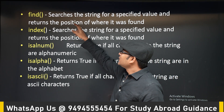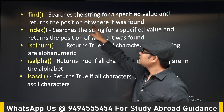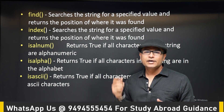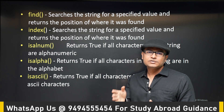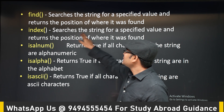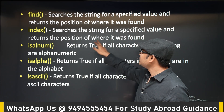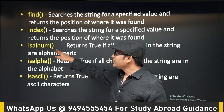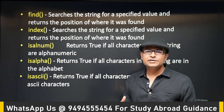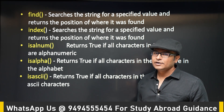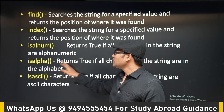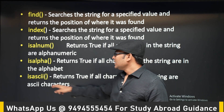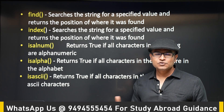Find searches the string for a specified value and returns the position where it was found the first time. For example, in the string 'ravi', find('a') will return index one. Index also searches the string for a specified value and returns the position — find and index are the same. isalnum returns true if the string contains only alphabets and numbers. isalpha returns true if the string contains only alphabets. isascii returns true if the string contains only ASCII values.